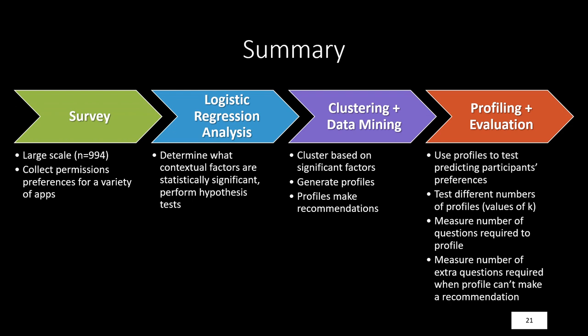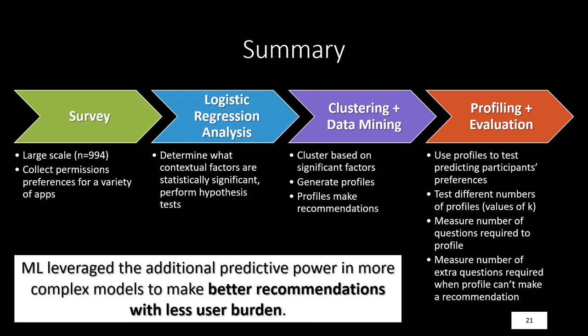Finally, we performed evaluation on the profiles. We used the profiles to test predicting participants' preferences for the apps, and we tested different numbers of profiles — values of K from 2 through 40. We measured the number of questions required to initially organize an individual into a profile, then the number of extra questions required when a profile was unable to make a recommendation. What we showed was that machine learning leveraged the additional predictive power in more complex models — those including purpose and other contextual factors — to make more accurate recommendations while burdening users less.